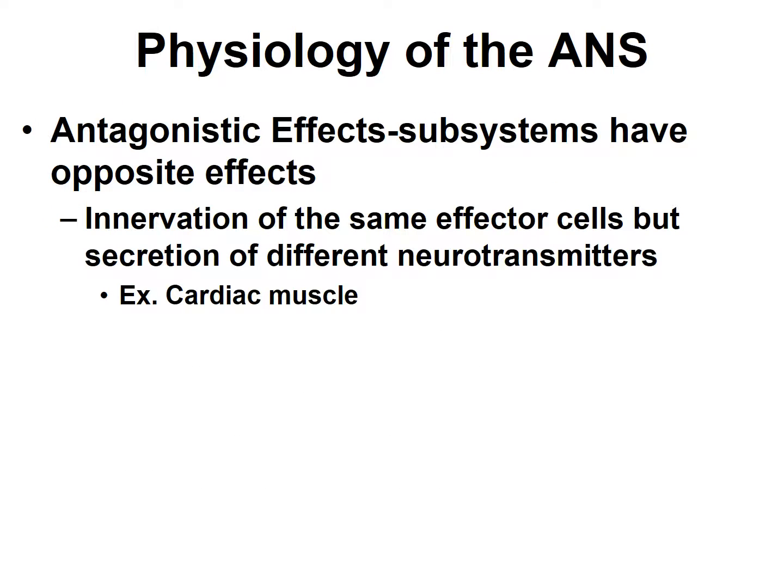There are two main ways by which these subsystems can have opposite effects. One is that they innervate the same effector cells but secrete different neurotransmitters. For example, with cardiac muscles, both sympathetic and parasympathetic nerve fibers synapse with the same cardiac muscle cells. However, the parasympathetic fibers are cholinergic — they release acetylcholine, causing a decrease in contraction. The sympathetic secretes norepinephrine, which causes an increase in the rate of contraction.